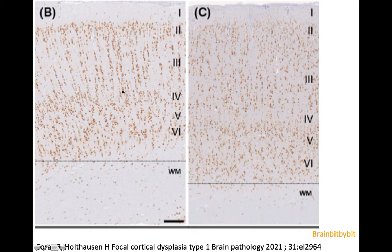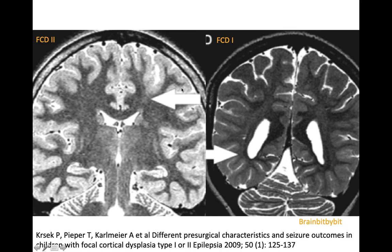Comparing cells in an imaginary voxel in FCD type 1 versus the normal cortex, you see that it's the same cells — this explains why it is so difficult to detect on MRI. Although FCD type 2 is much more dysplastic on histopathology and MRI than FCD type 1, the prognosis of FCD type 1 is worse because of the wide extent of abnormalities. It is difficult to find the margins, and when surgery is performed, patients with FCD type 1 are more often not seizure-free.